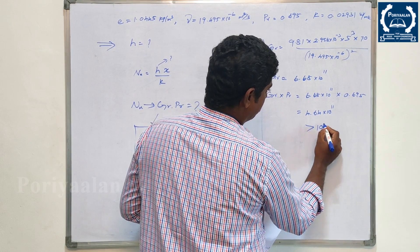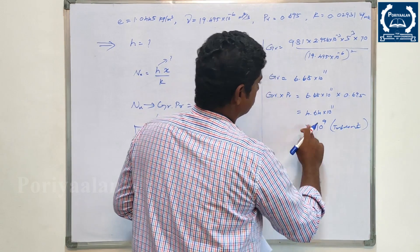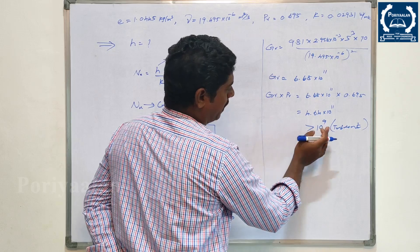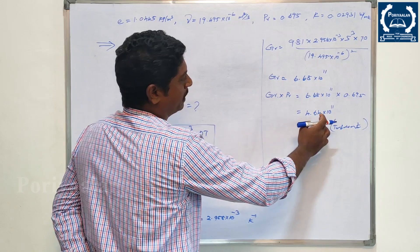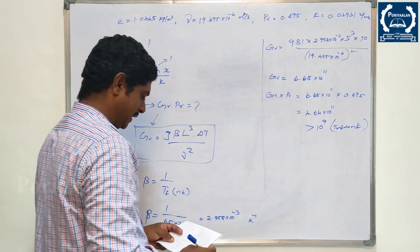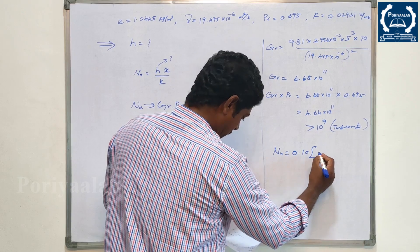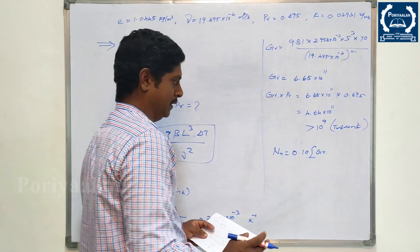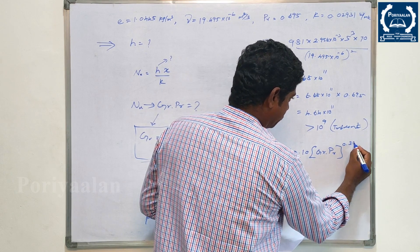Since Gr·Pr equals 4.64 × 10¹¹, which is greater than 10⁹, the flow is turbulent. For turbulent free convection on a vertical plate, the Nusselt number formula from the data book is: Nu equals 0.10 × (Gr·Pr)^0.333.